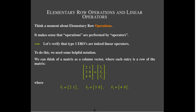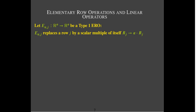As an example, if I have a matrix with two columns and three rows, I'm going to treat each row as its own vector. I'm using a capital E to represent the elementary row operation, with two subscripts: J is the index of the row, and alpha is the scalar being multiplied by that row.